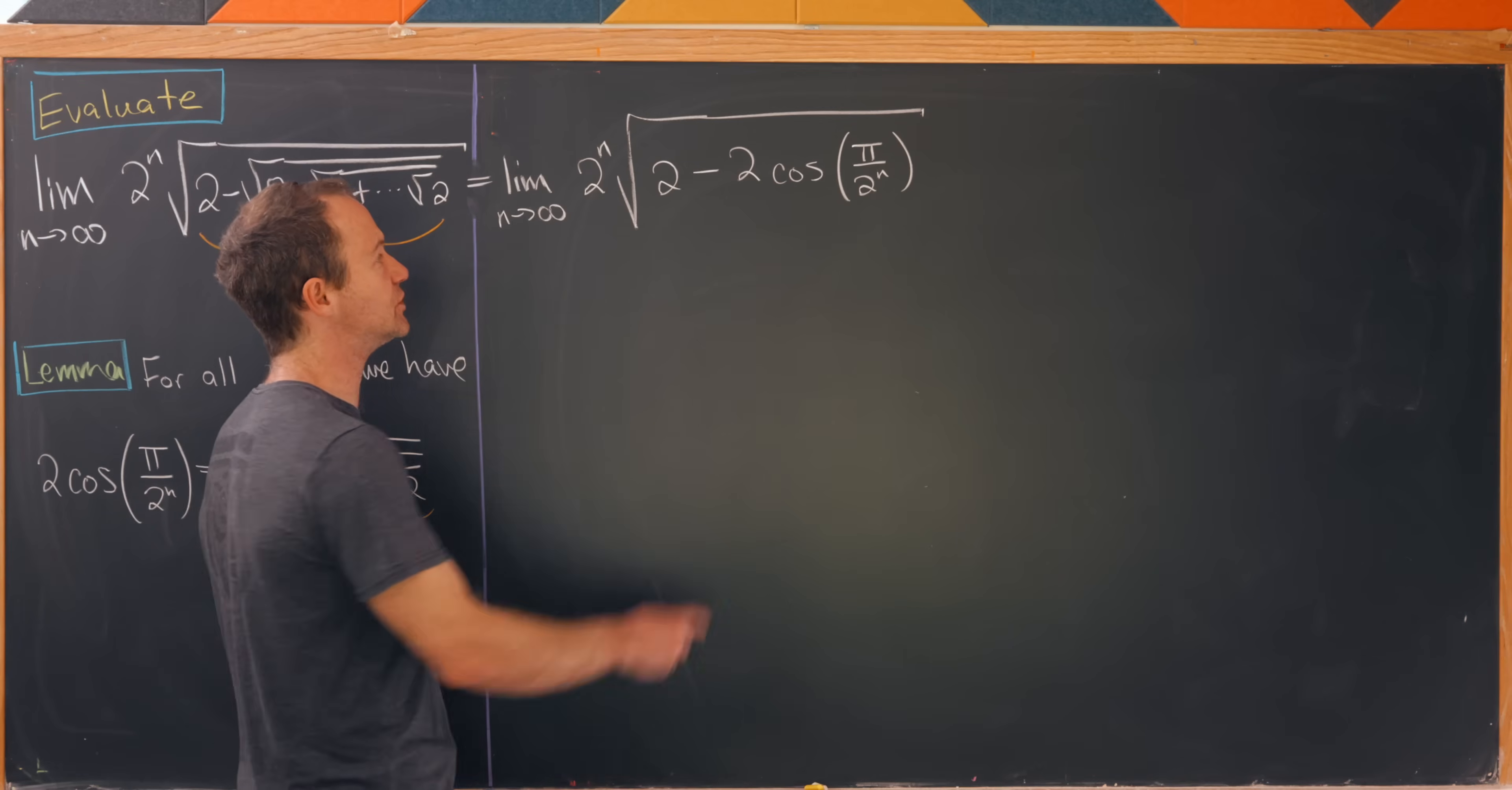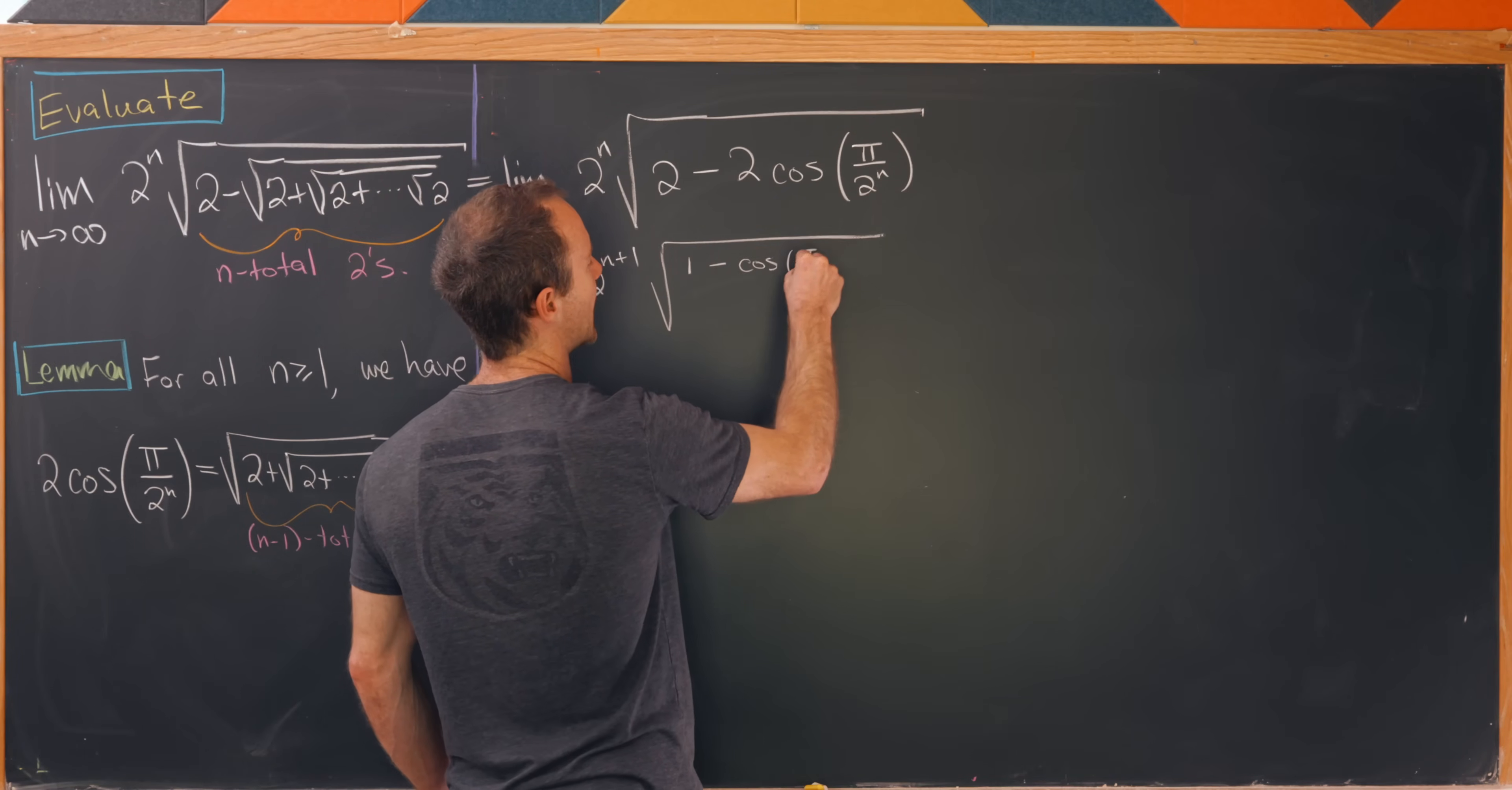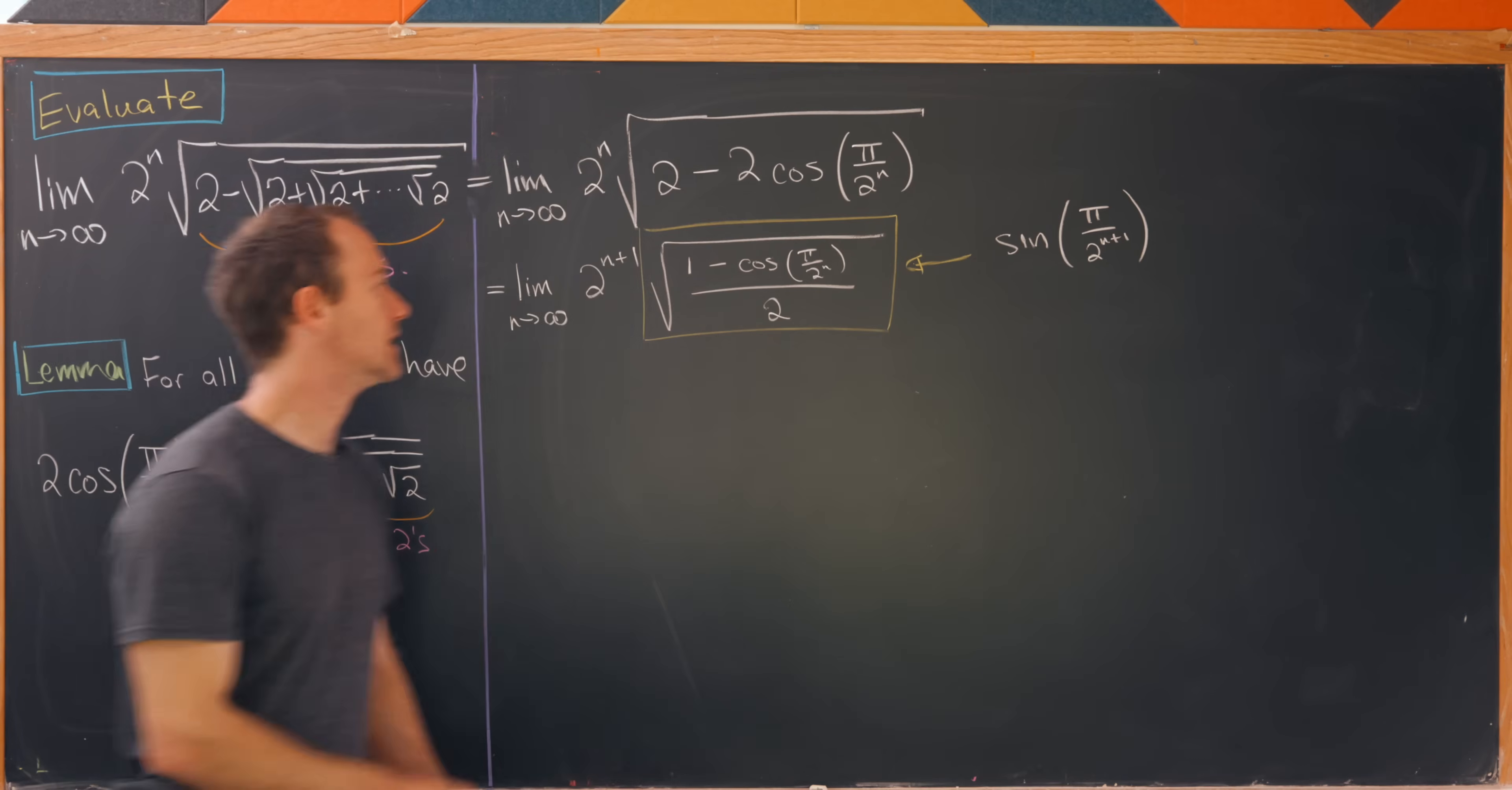Now the trick will be to not only factor a 2 out of this but we're actually going to factor a 4 out of this whole thing. We'll have the limit as n goes to infinity of 2 to the n plus 1, but then factoring a 4 out leaves us with 1 minus cosine of pi over 2 to the n all over 2. Now we've got something that looks like another trig identity on the board. This thing that I'm boxing in yellow is equal to the sine of pi over 2 to the n plus 1.